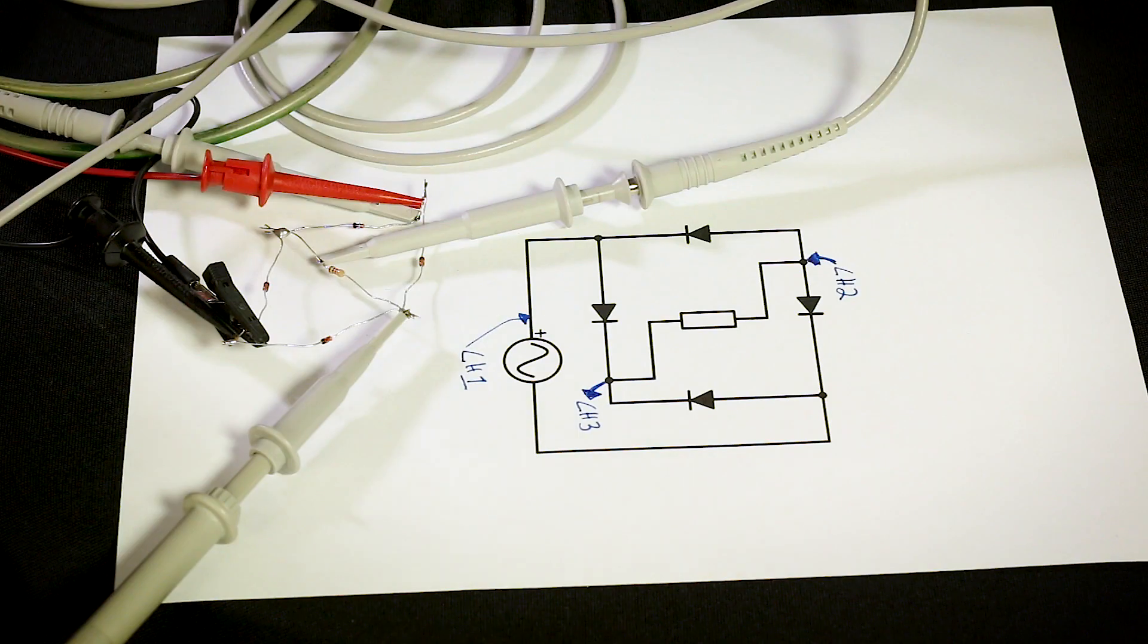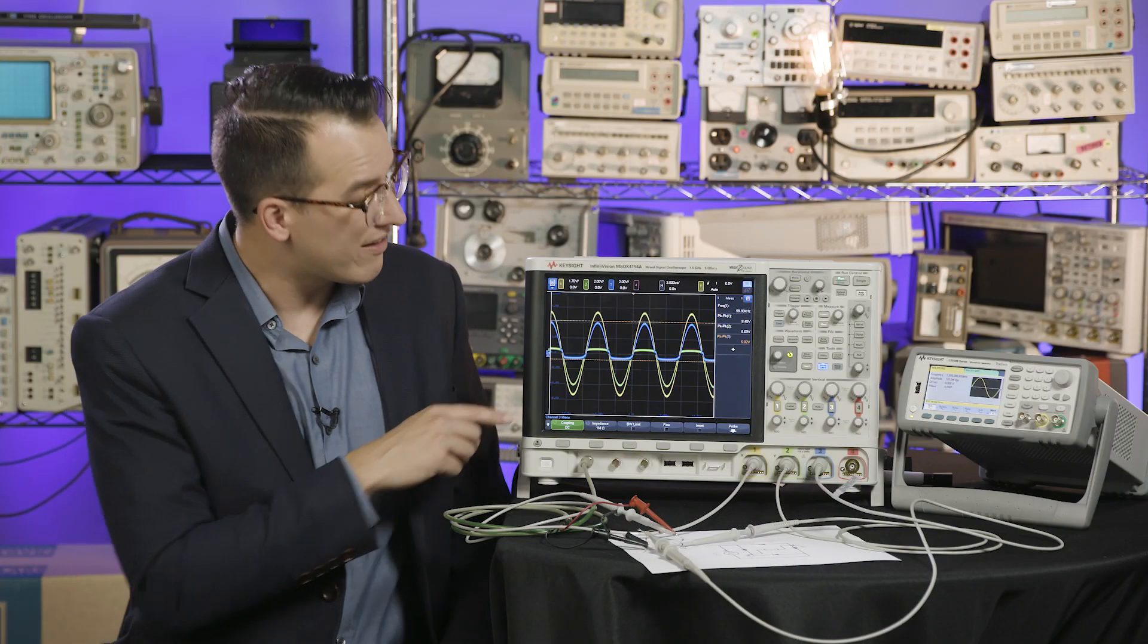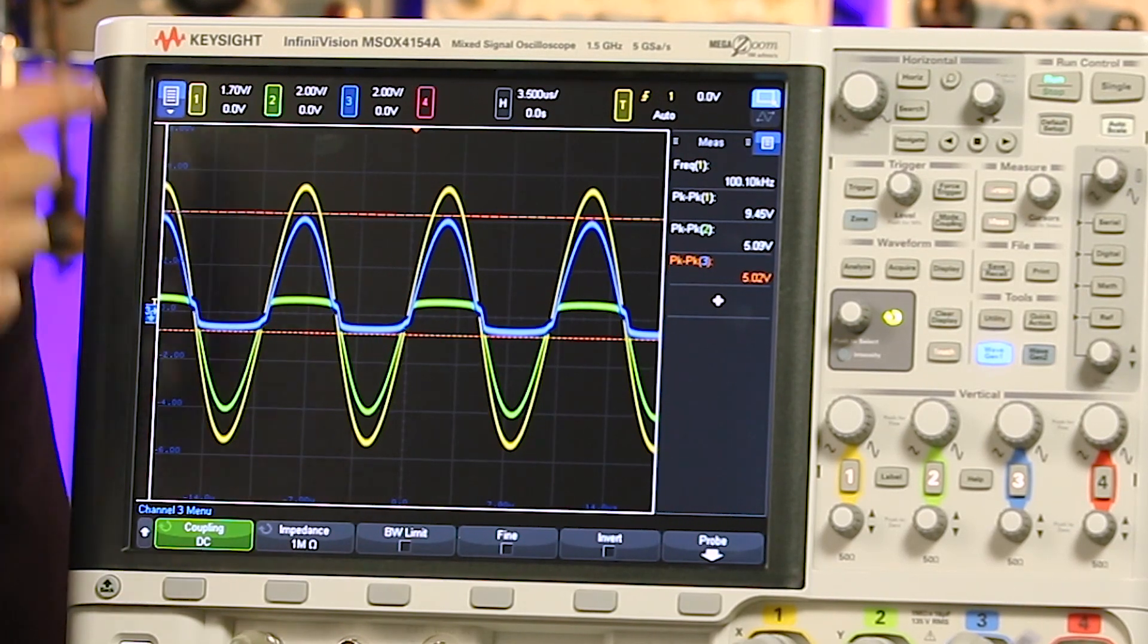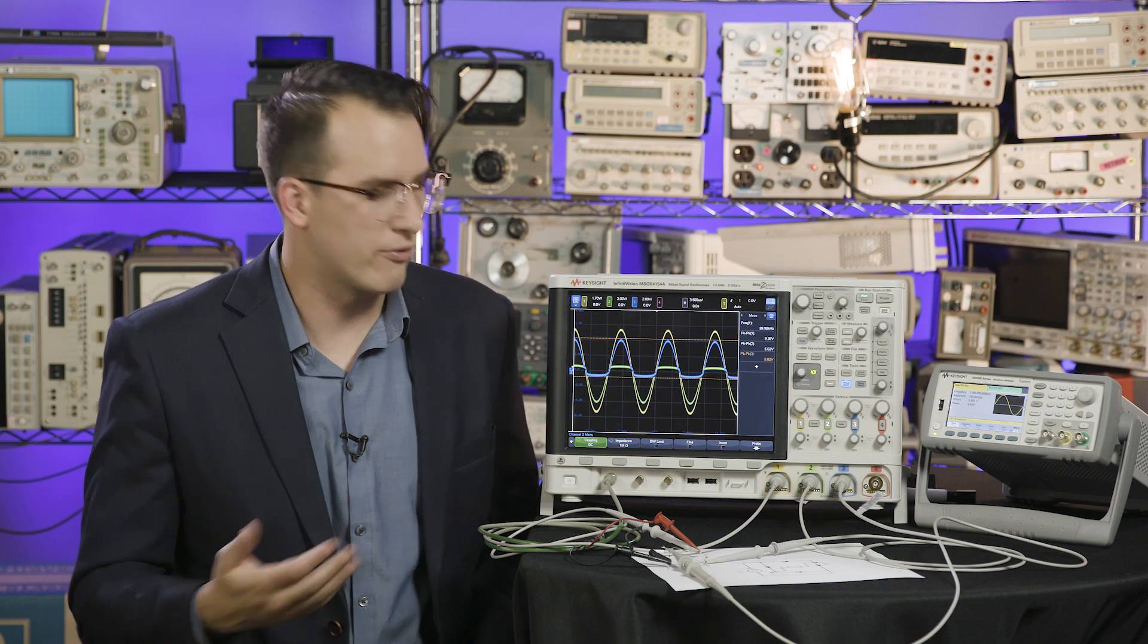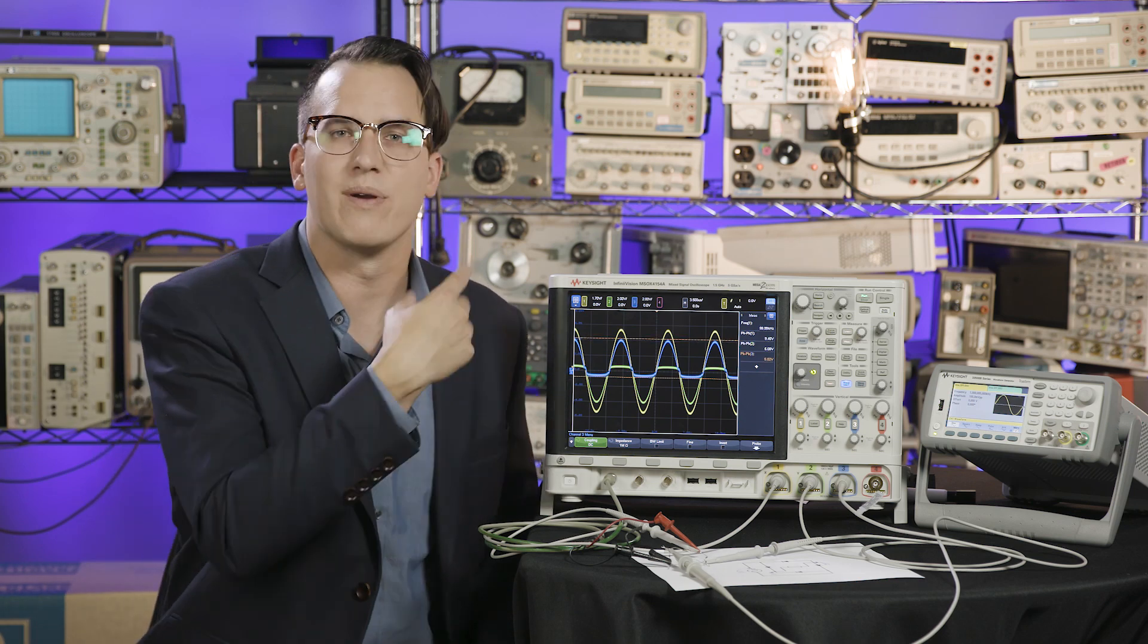Well, we want to know the potential difference between these two nodes, and when I probe with a single-ended probe, I'm comparing this node to ground and this node to ground. On channel 2, you see that the signal hangs at plus 0.7 volts, which is the diode, and then swings negative, and we see the inverse on channel 3, minus 0.7 volts and then a swing positive.